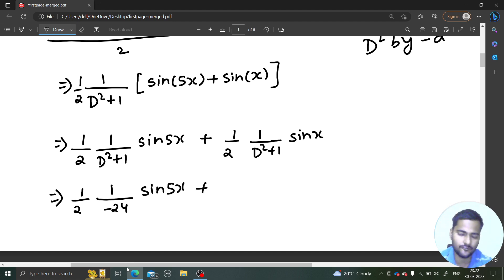For the second part, coefficient of x here is 1, and if you square 1 you will get 1 only with a negative sign. If you replace D² by -1, your denominator becomes 0. In case denominator becomes 0, what we do? We first multiply by x and that x is multiplied outside this operator, outside just at the place where 2 is there, put that x and differentiate the denominator with respect to D. D² derivative is 2D, derivative of 1 is 0, and this sin(x) remains as it is.